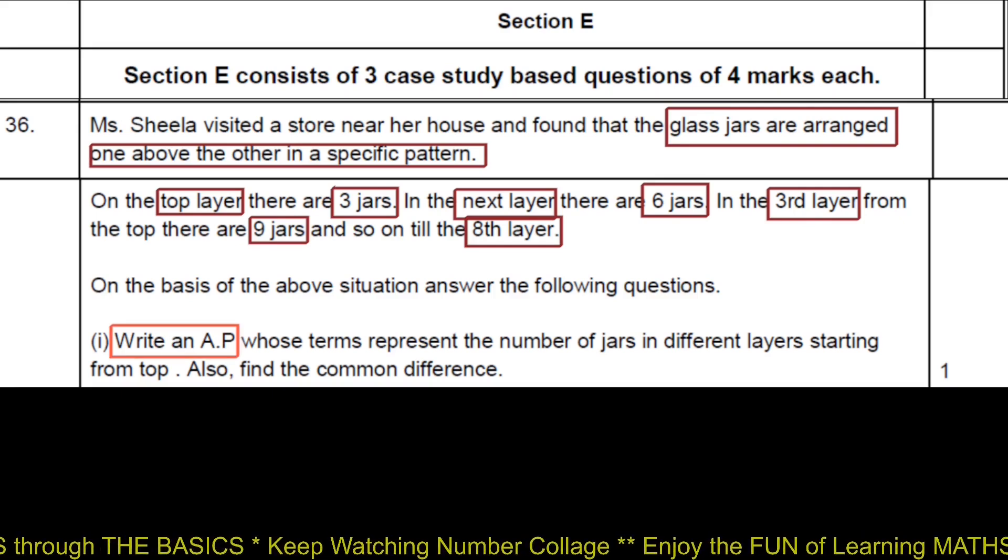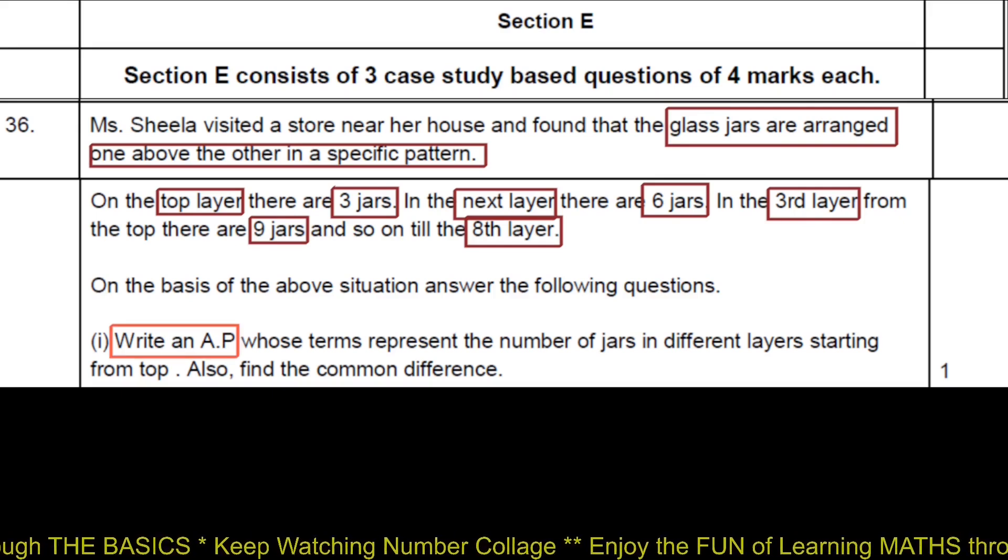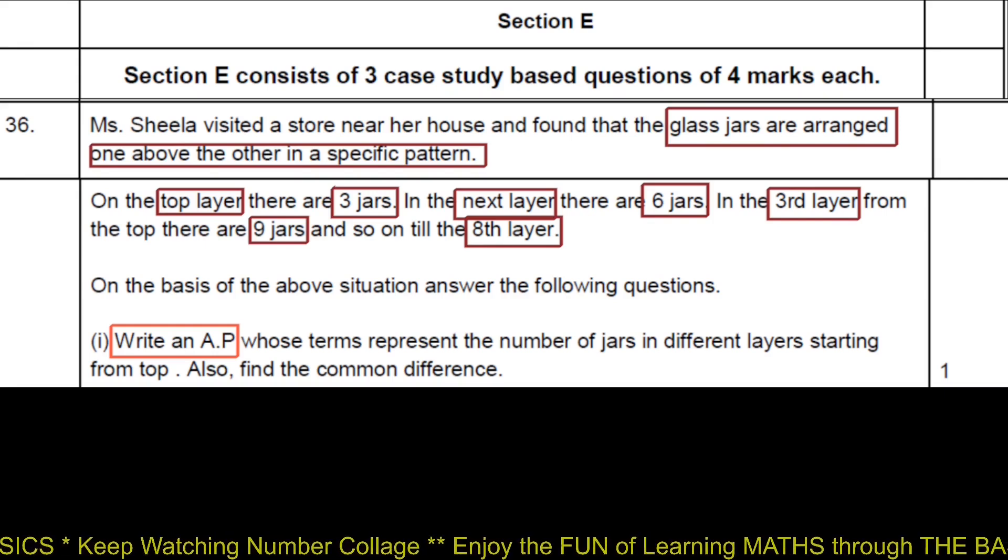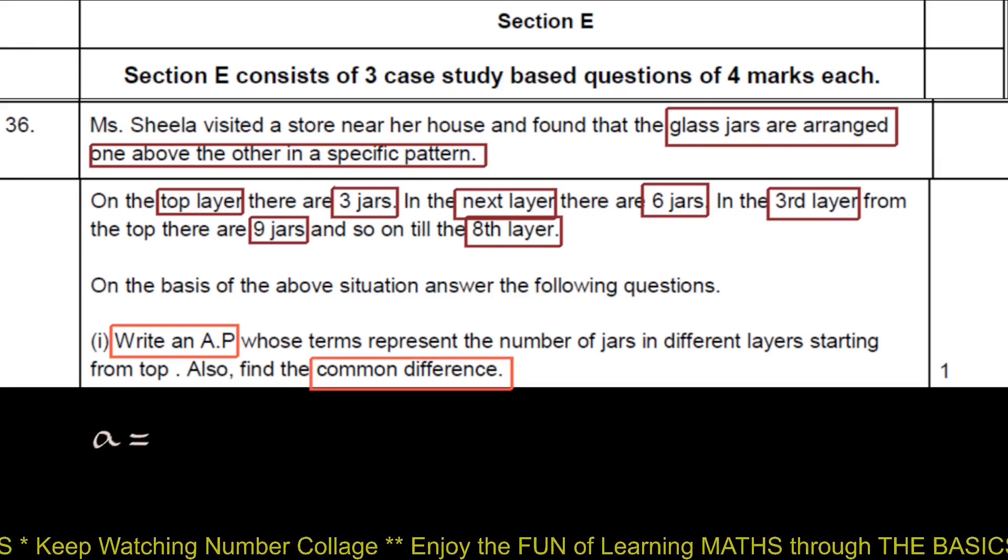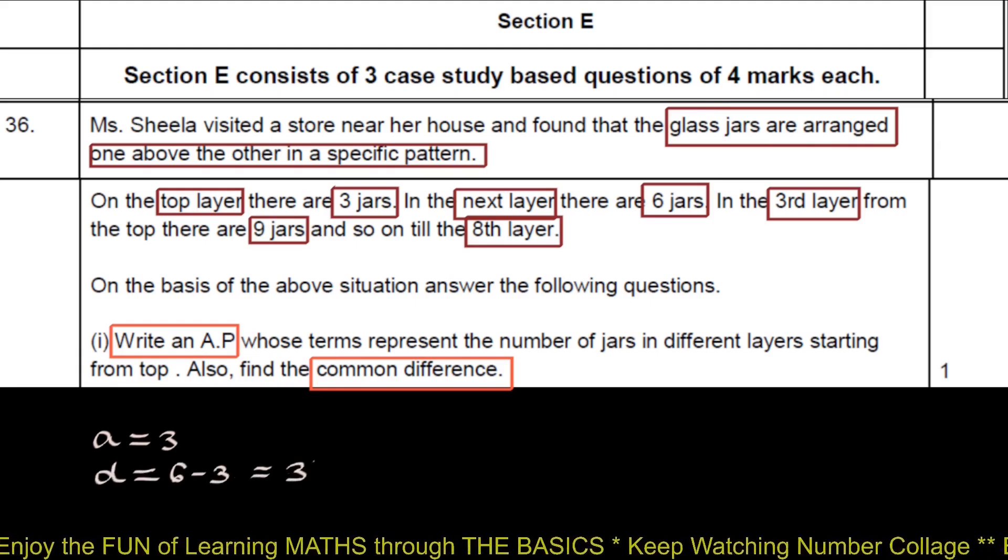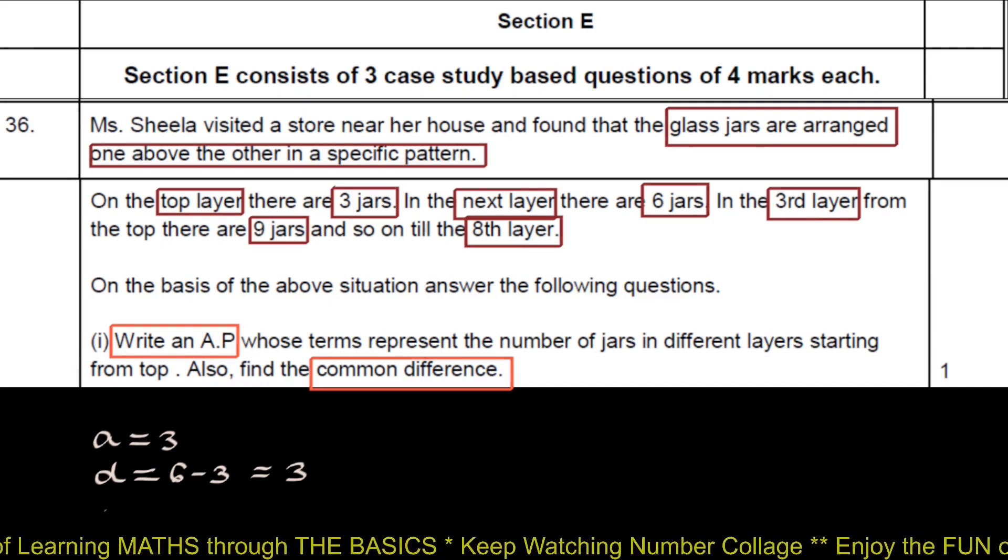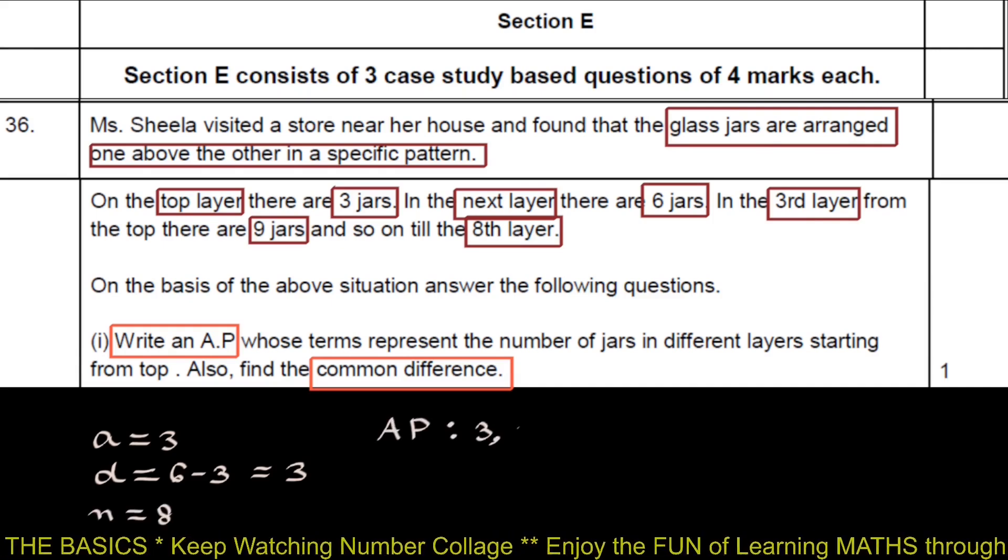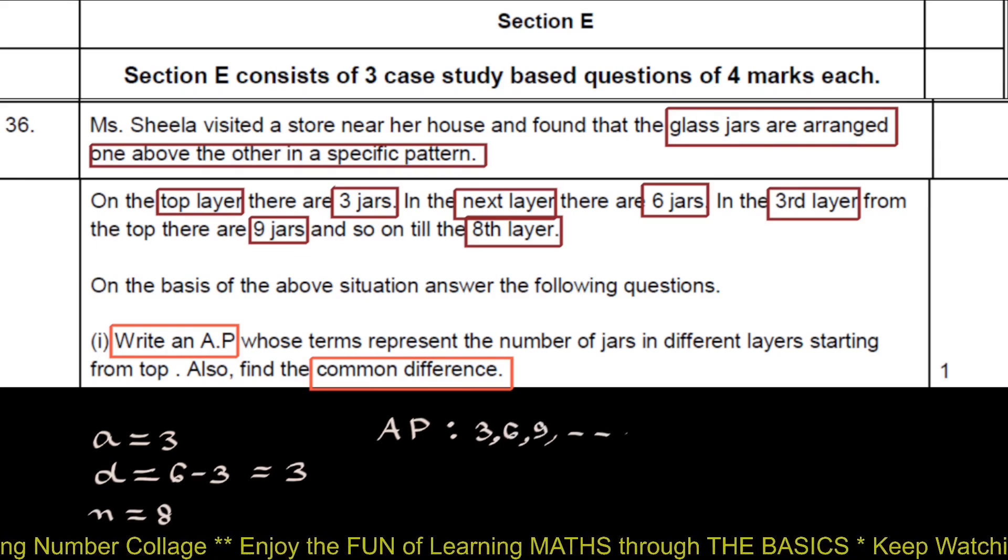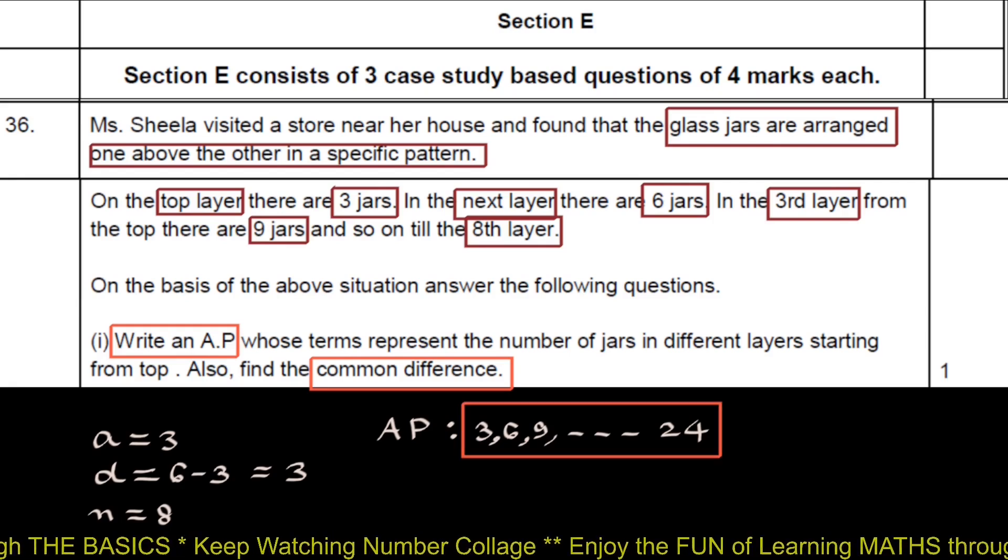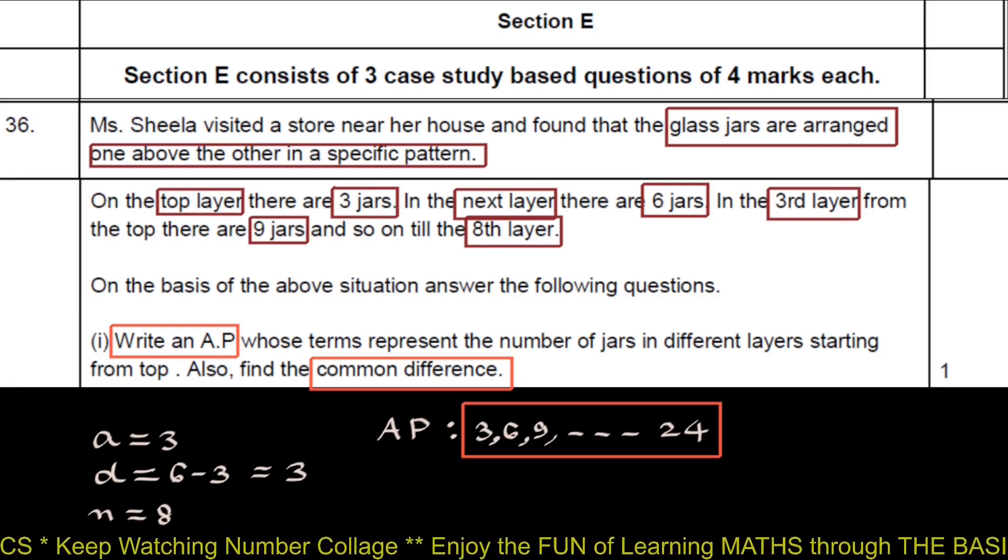Write an AP whose terms represent the number of jars in different layers starting from top. Also find the common difference. First term A is 3. Common difference D is 6 minus 3 equals 3. And there are 8 layers, which means N is 8. So the required AP will be 3, 6, 9, and so forth, 24. So AP is this and common difference D is 3.